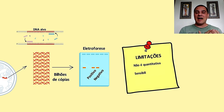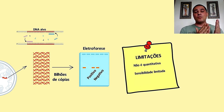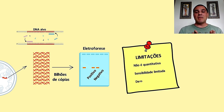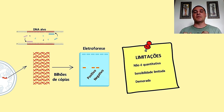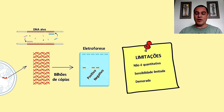A sensibilidade também é limitada porque o aparecimento da banda no gel é dependente da quantidade de DNA que foi amplificado. Então, se tem uma quantidade inicial muito baixa, talvez a gente não consiga uma amplificação muito clara no gel. E é uma técnica demorada porque ela é em duas etapas: primeiro fazer a PCR e depois, numa outra técnica de eletroforese, fazer a visualização do que foi amplificado.